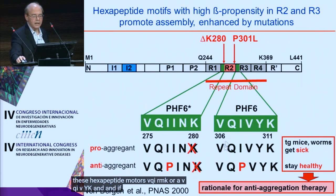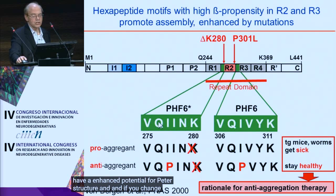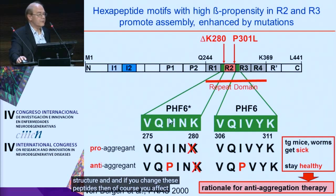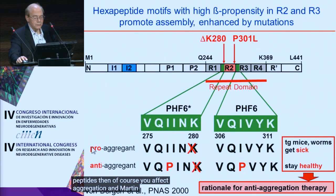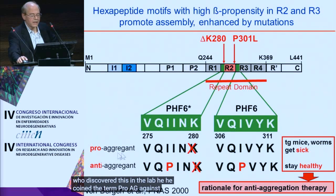These motifs have an enhanced potential for beta structure, and if you change these peptides, you affect aggregation. Martin von Bergen, who discovered this in the lab, coined the terms pro-aggregant mutations and anti-aggregant mutations.